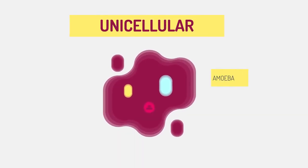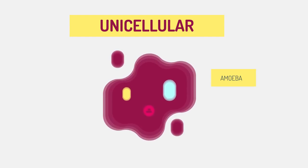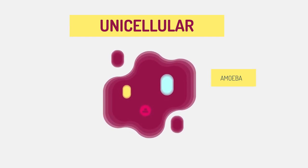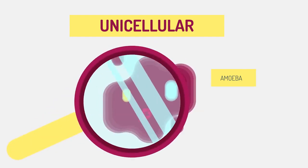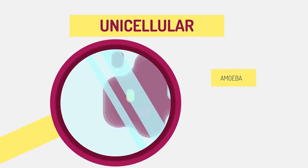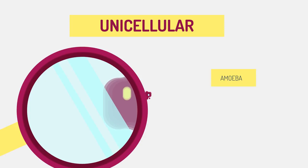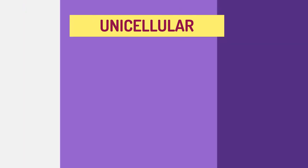Did you know that some organisms exist of just one cell? These simple organisms, like amoeba, are unicellular. They depend on simple diffusion for life. They are usually too small to be visible with the naked eye, like bacteria, and so we need a microscope to see them.